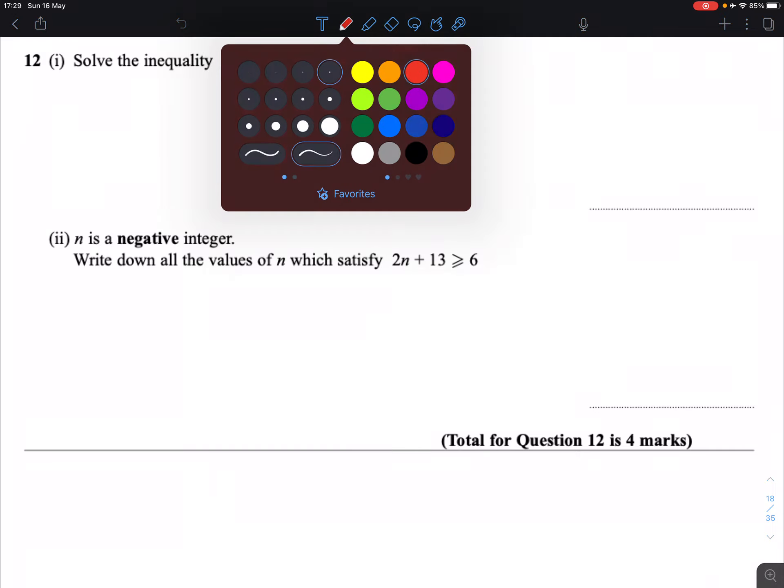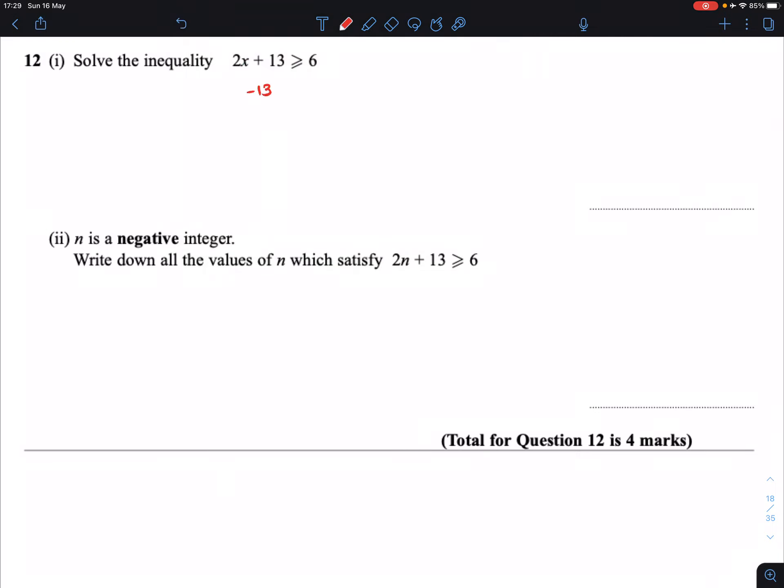So we rearrange the inequality just like we would an equation, except we've got to be careful because if we ever multiply or divide by a negative number, that will make the inequality change direction. However, in this case, we don't have to worry about that.